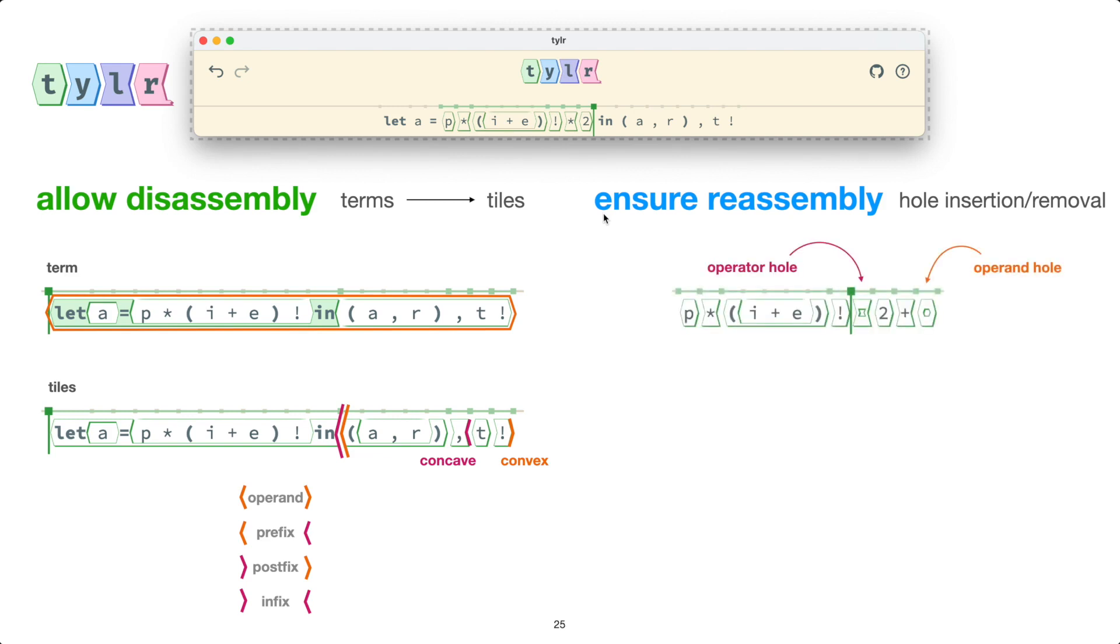Now there are two kinds of holes. There are operand holes like the one that we just observed. And there are also operator holes. So if I were to now delete this times, we'd have an operator hole to make sure that the things on either side fit together. And let me break down how hole insertion and removal in that edit sequence to insert that times two.